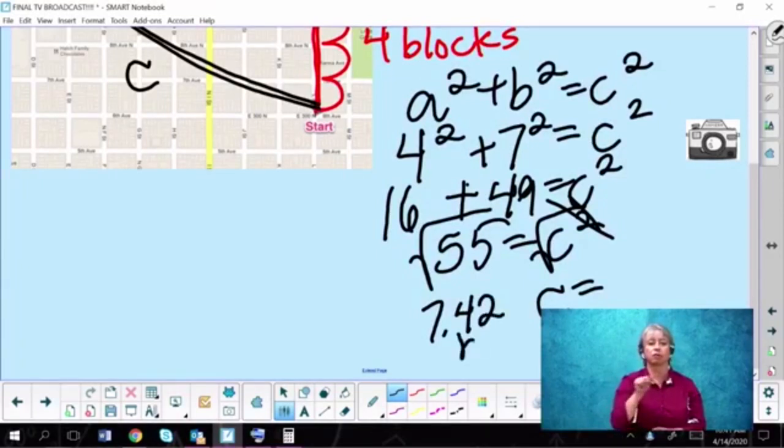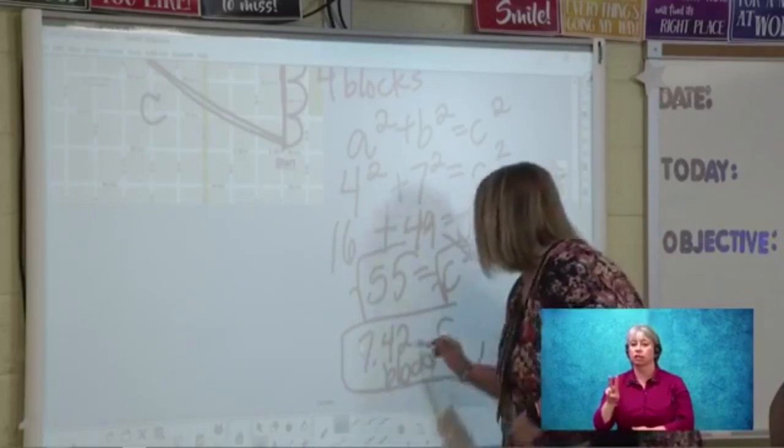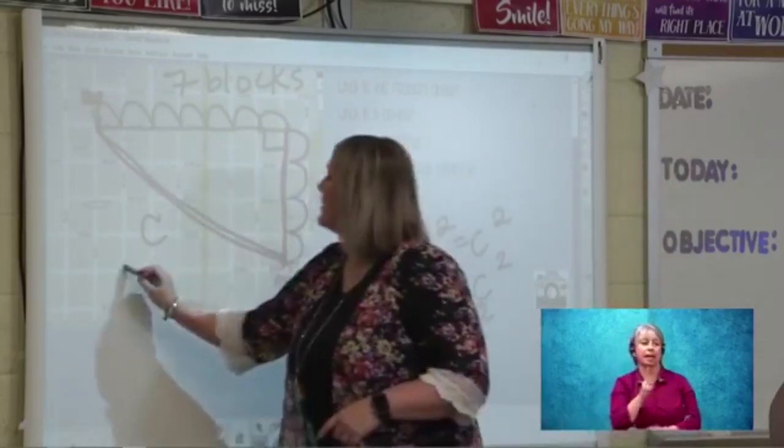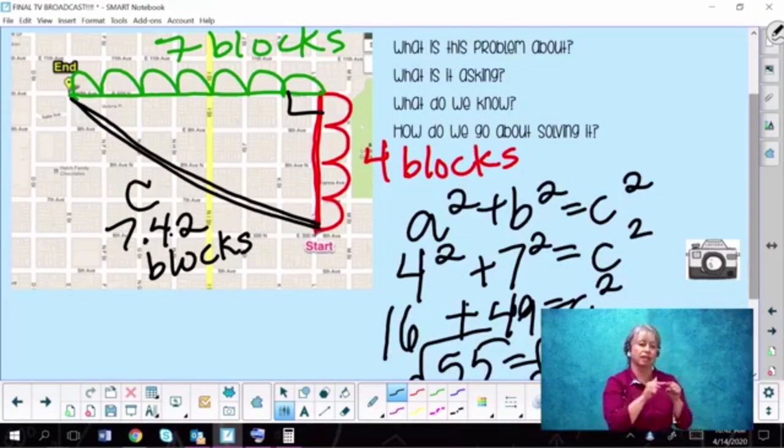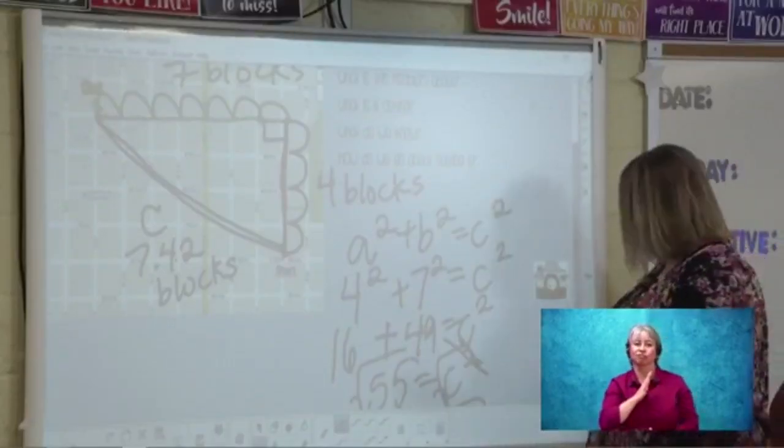7.42, and we need to keep our units in there. This would be blocks. So c would equal 7.42 blocks. And back to our picture, 7.42 blocks here. 7.42 blocks, which is close to 7.5, is a lot shorter than 11 blocks. So that's how we use the Pythagorean theorem to find the shortest distance between the start and the end. This is a capture slide. So if you have your device and you want to capture this, you could take a quick snap of what we did.